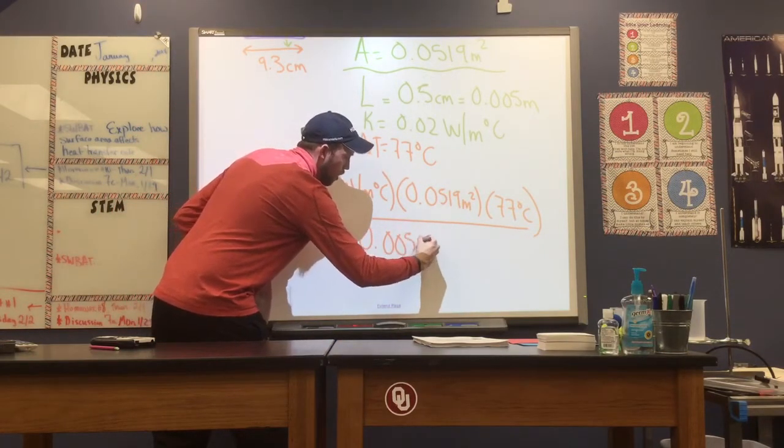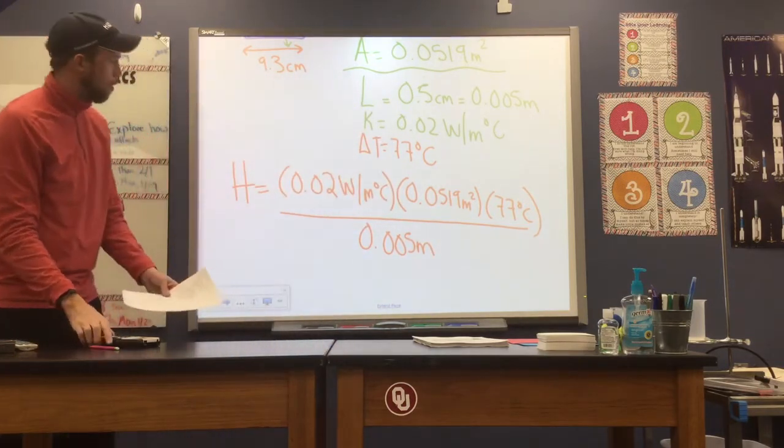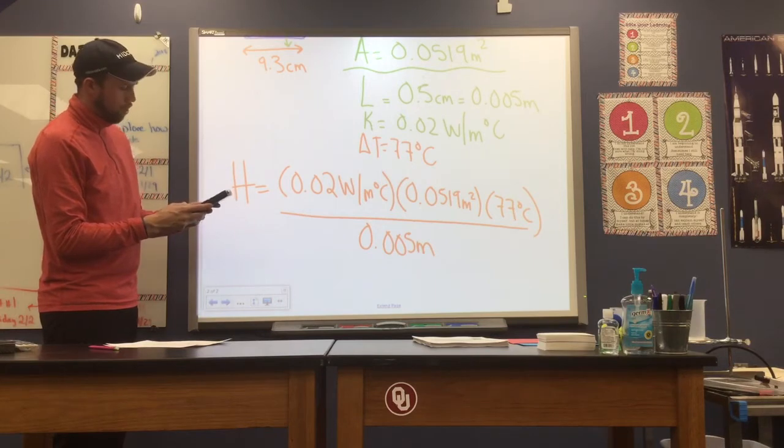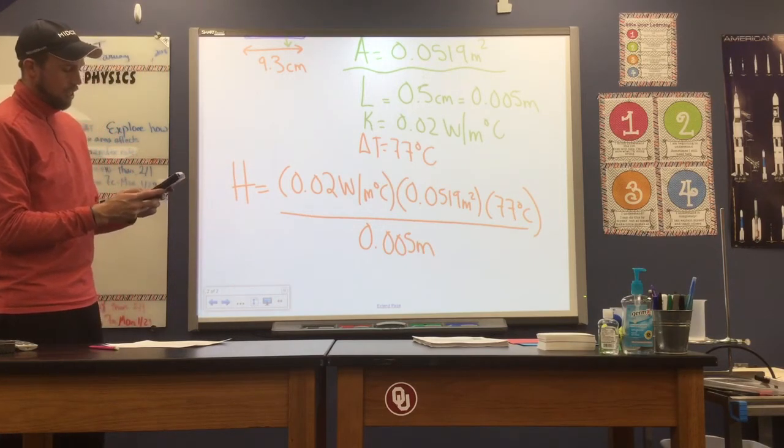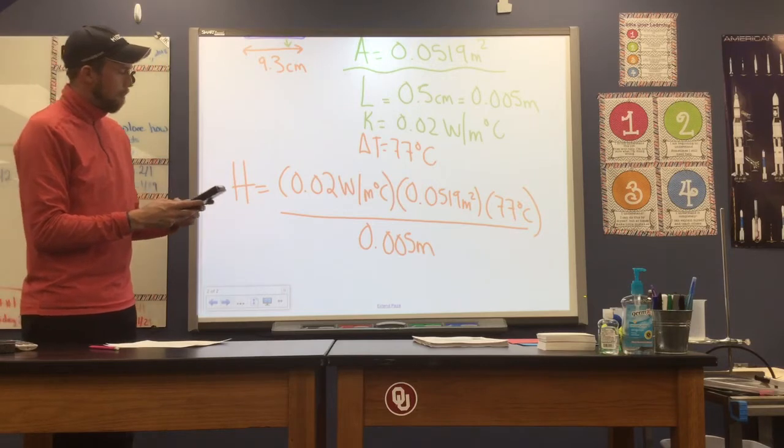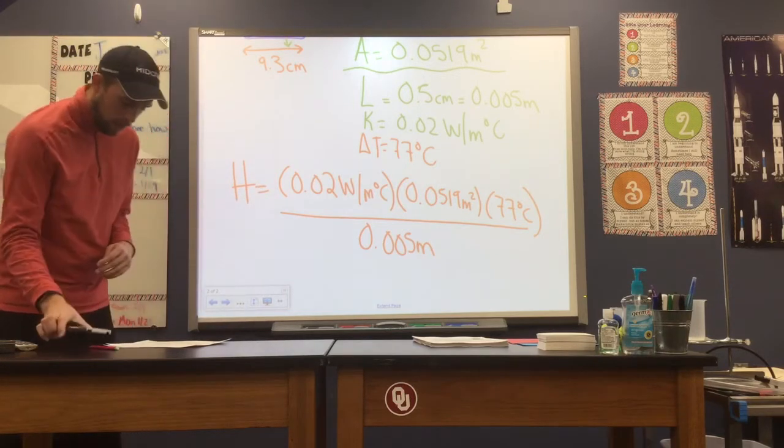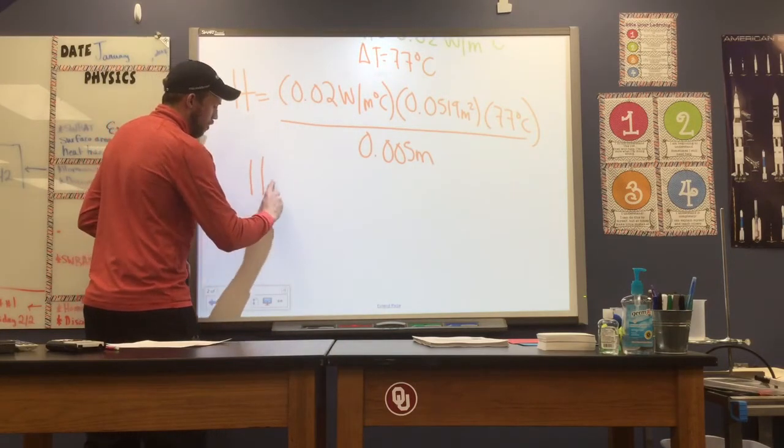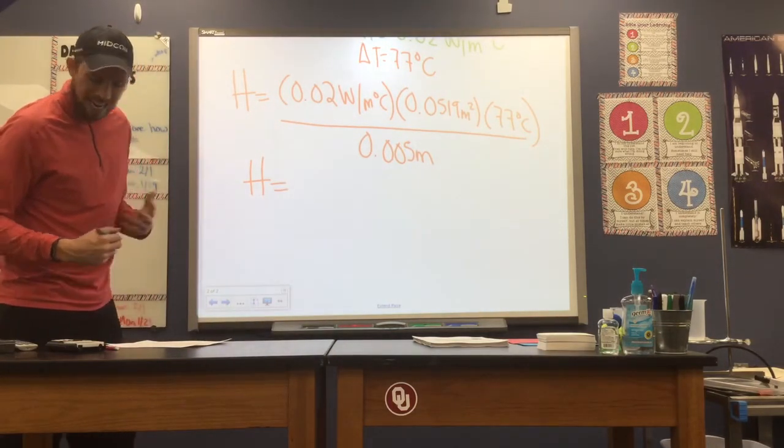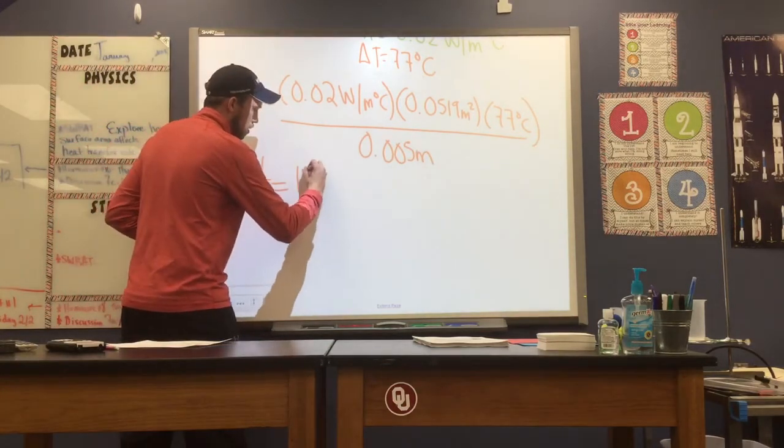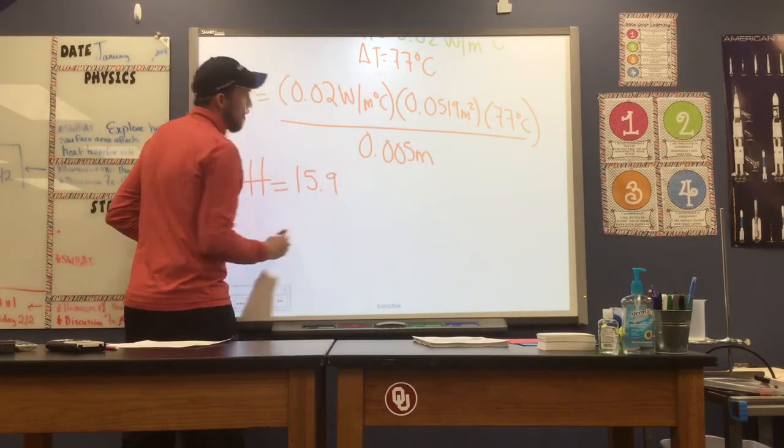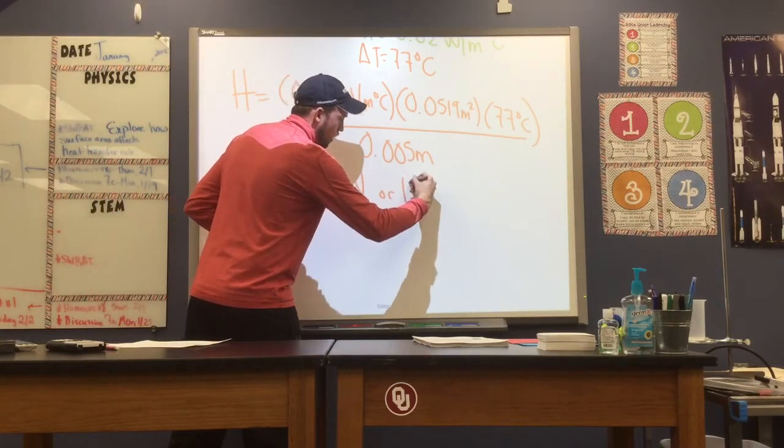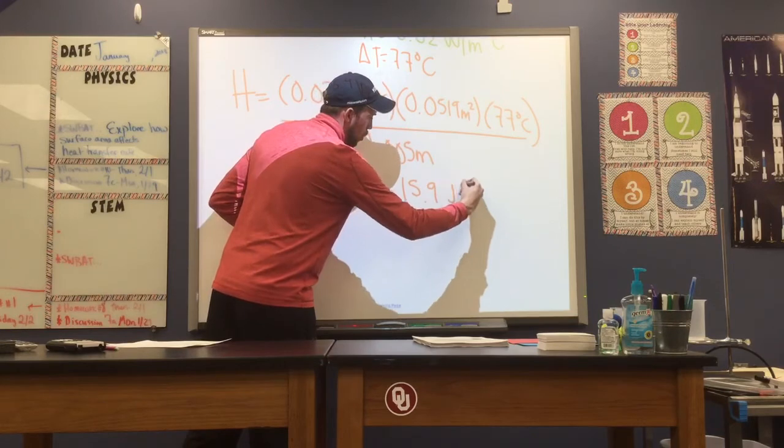So let's plug this in and see what we get: 0.02 times 0.0519 times 77, divided by 0.005. When we plug this value in, I get a heat transfer rate of 15.99. And this can be expressed in watts, or we can say 15.9 joules per second. I like to write joules per second just so we don't forget it's a measurement of thermal energy, heat moving in a given amount of time.